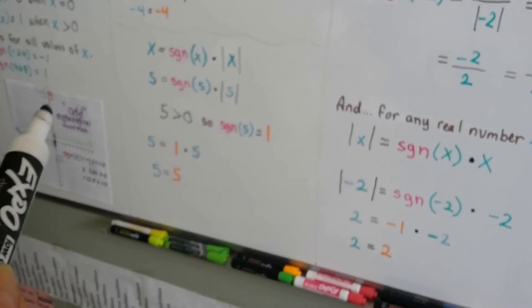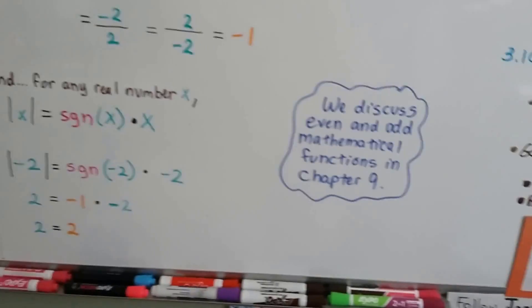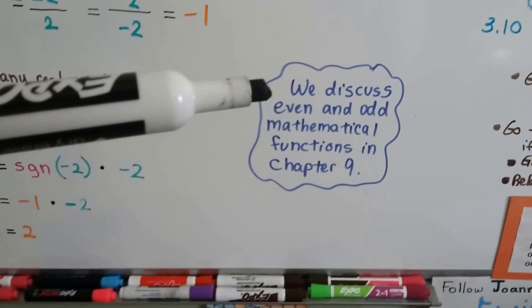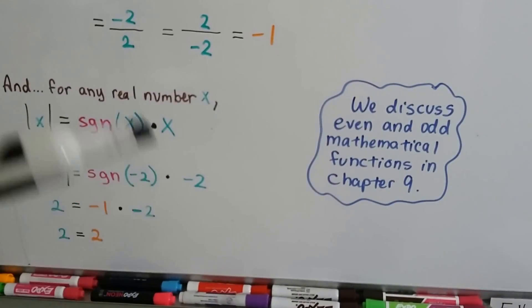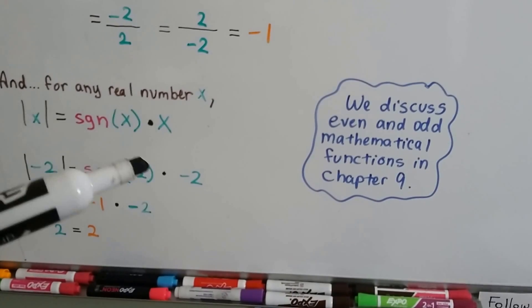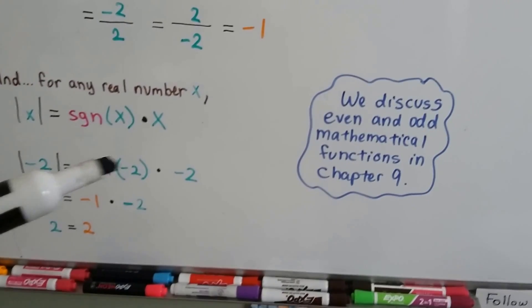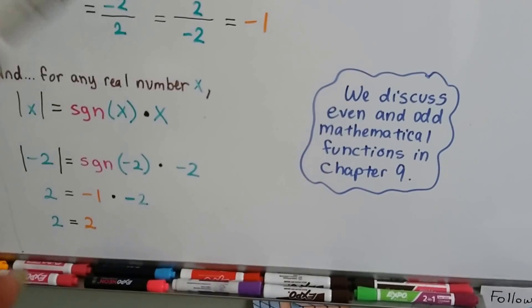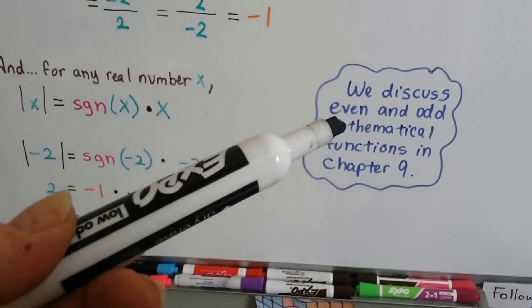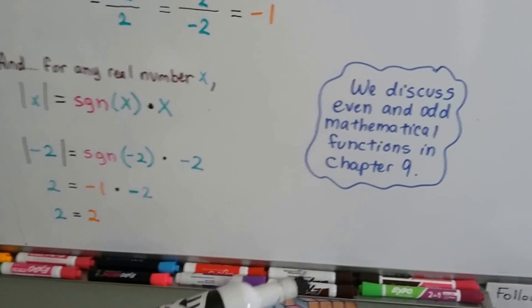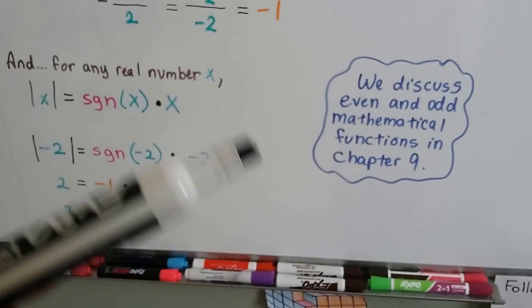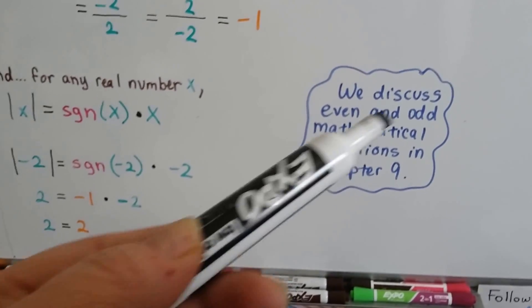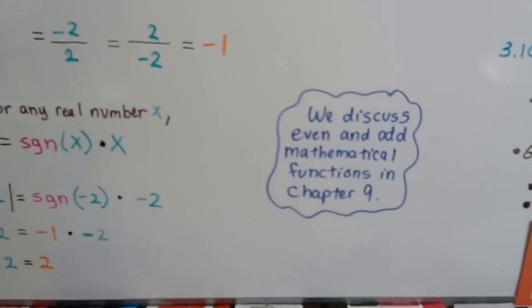Now, I mentioned this is an odd mathematical function. We'll discuss even and odd math functions in chapter 9. Basically, for even functions, whether you input a negative or positive number, you get the same answer. For odd functions, you get opposite answers — so inputs of negative 2 and positive 2 will give opposite results. We'll talk more about that in chapter 9.